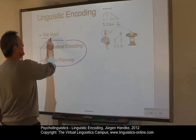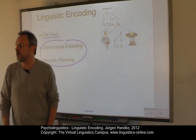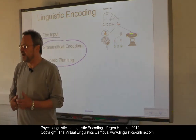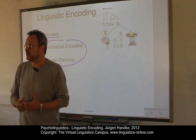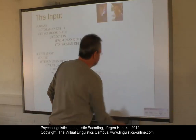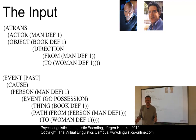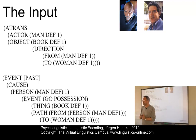First of all, we look at the input to the level of linguistic encoding and we will use a certain working model to do so. Before the level of linguistic encoding can come into action, we have to generate a conceptual structure, or as some people call it, a pre-verbal message. This structure is language independent.